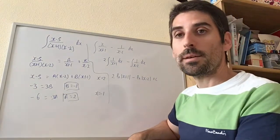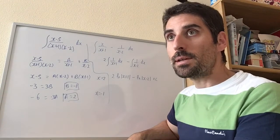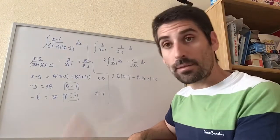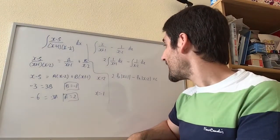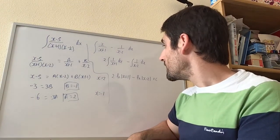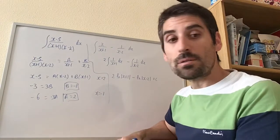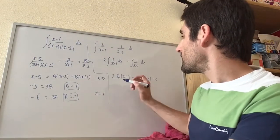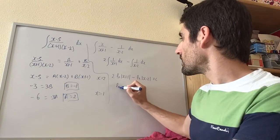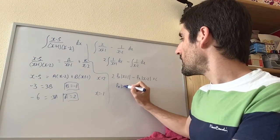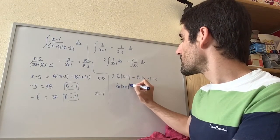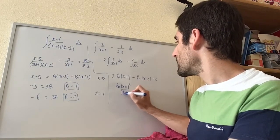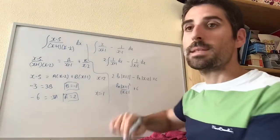Plus C, because we have an indefinite integral. Then if we simplify using the laws of logarithms, this becomes log of (x plus 1) squared divided by (x minus 2), plus C.